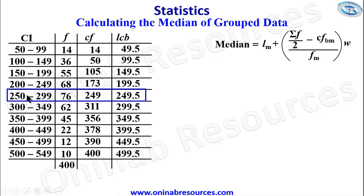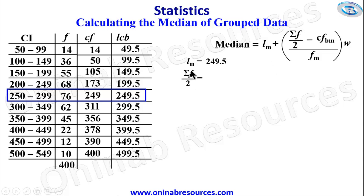To illustrate further: if the total population were 500, we'd divide by 2 to get 250 and look where 250 falls in the cumulative frequency. If the population were 600, the median class would be where 300 falls, which would be the 300–349 class. Having identified our median class, Lm — the lower class boundary of the median class — is 249.5.